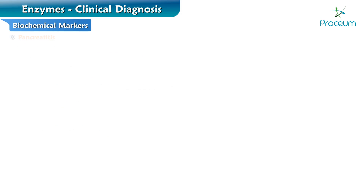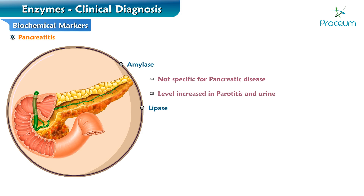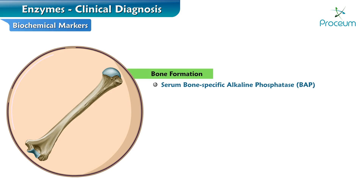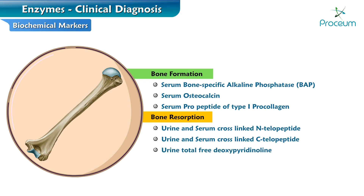Enzyme markers of pancreatitis include amylase and lipase. Serum amylase is not specific for pancreatic disease, as its level is also increased in parotitis and urine. Serum lipase is more specific and can be used to differentiate a pancreatic from a non-pancreatic cause of hyperamylasemia. Markers for bone formation include serum bone-specific alkaline phosphatase (BAP), serum osteocalcin, and serum propeptide of type 1 procollagen. Markers of bone resorption include urine and serum cross-linked N-telopeptide, urine and serum cross-linked C-telopeptide, and urine total free deoxypyridinoline.